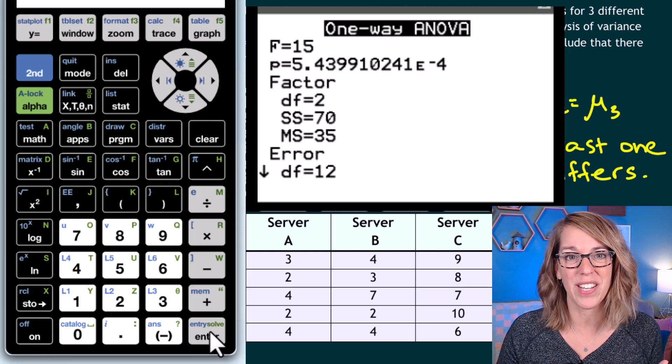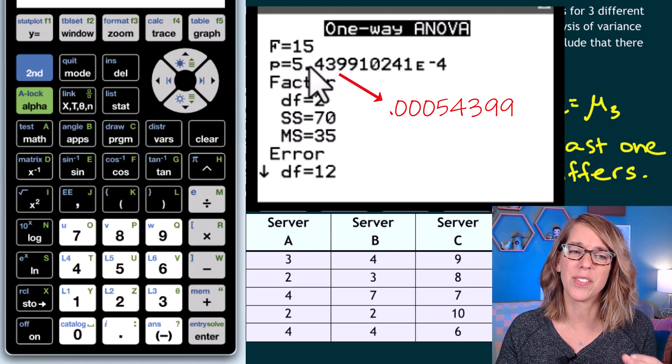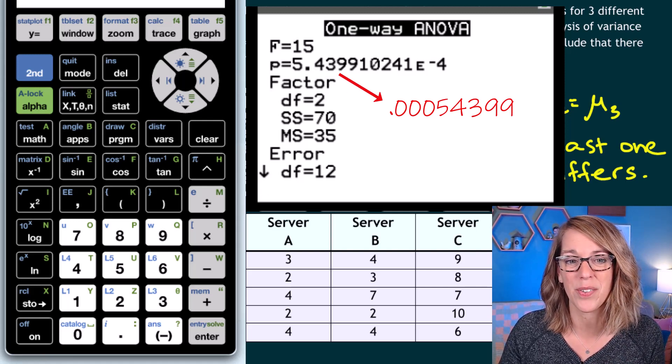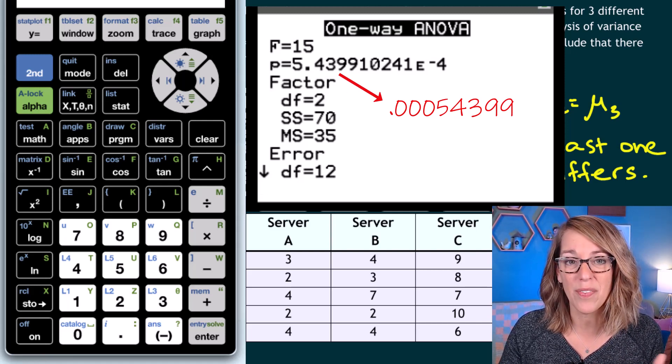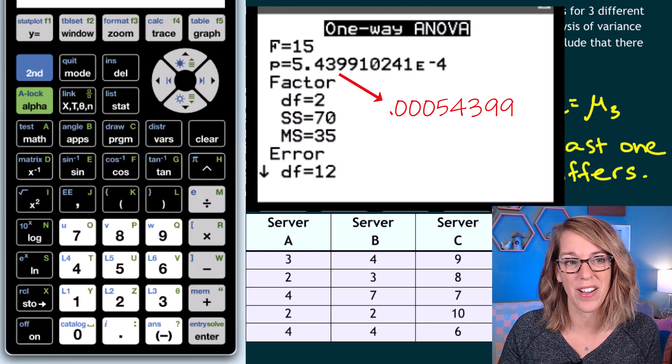It gives me all of the information that I need. F is my test value, but it also gives me this P value. This is a really tiny P value. Comparing that to my alpha of 0.05, I would absolutely reject this null hypothesis.